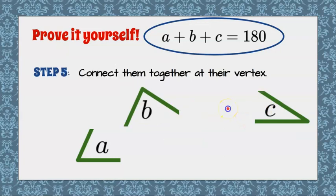Here's our next step. We're going to connect them together at the vertex. The vertex of an angle is the point where the two rays meet to form the angle. So this right here is the vertex of A. So let's move A over to here.